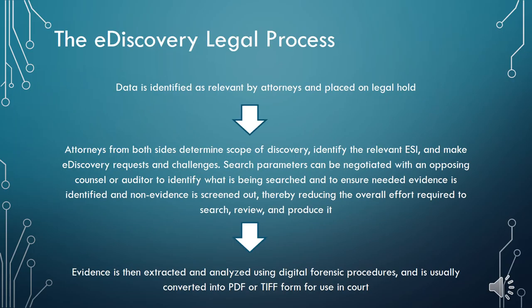So exactly what does the eDiscovery legal process look like? It starts off with attorneys and working staff such as paralegals, who consider what information is relevant and place that information on legal hold. Both sides get the opportunity to review what ESI is relevant, then they can make requests or challenge the relevant information — this is where sorting out irrelevant information is key, because time and money are of the essence. Finally, whatever evidence is taken from that process is extracted, analyzed, and then converted into PDF or TIFF form to use in court.